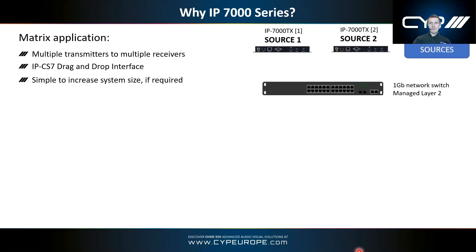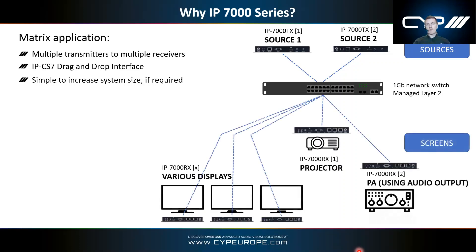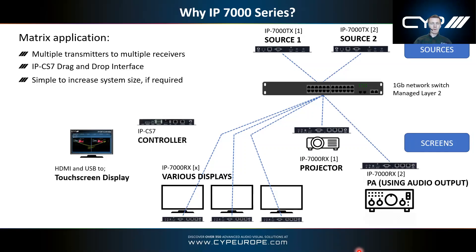In a system like this, transmitters connect to the network switch — up to 100 metres via Cat cable from transmitter to switch, and a further 100 metres from switch to receivers. All receivers connect into the network switch. If you're using PoE, that sends power out to them as well. The CS7 controller also connects to the network switch, and one control method is hardwiring it to a touchscreen display via HDMI and USB, giving you the graphical drag-and-drop interface on screen.